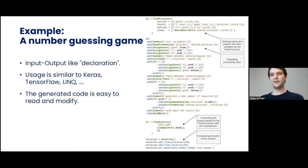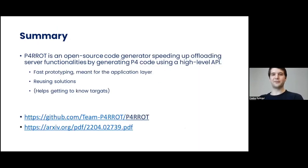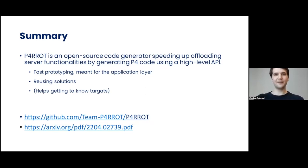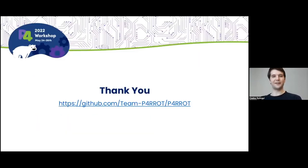The generated code is also human-readable and easy to modify if required. To summarize, Parrot is an open source code generator library that speeds up offloading several functionalities by generating P4 code using a high-level API. Besides fast prototyping and reusing existing solutions, it can also be a good way to get to know new targets. Check out our GitHub repository where we have a very good Hello World tutorial.